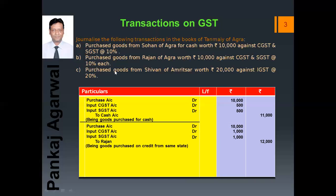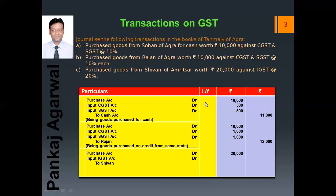Next transaction: purchase goods from Shivan of Amritsar worth ₹20,000 against IGST at the rate 20%. As the goods are purchased from outside the state, we have to use IGST. So the entry is: Purchases Account debit, Input IGST Account debit, to Shivan. We will calculate 20% of ₹20,000, which comes to ₹4,000. Together it is ₹24,000. The narration will be: being goods purchased on credit from other states.